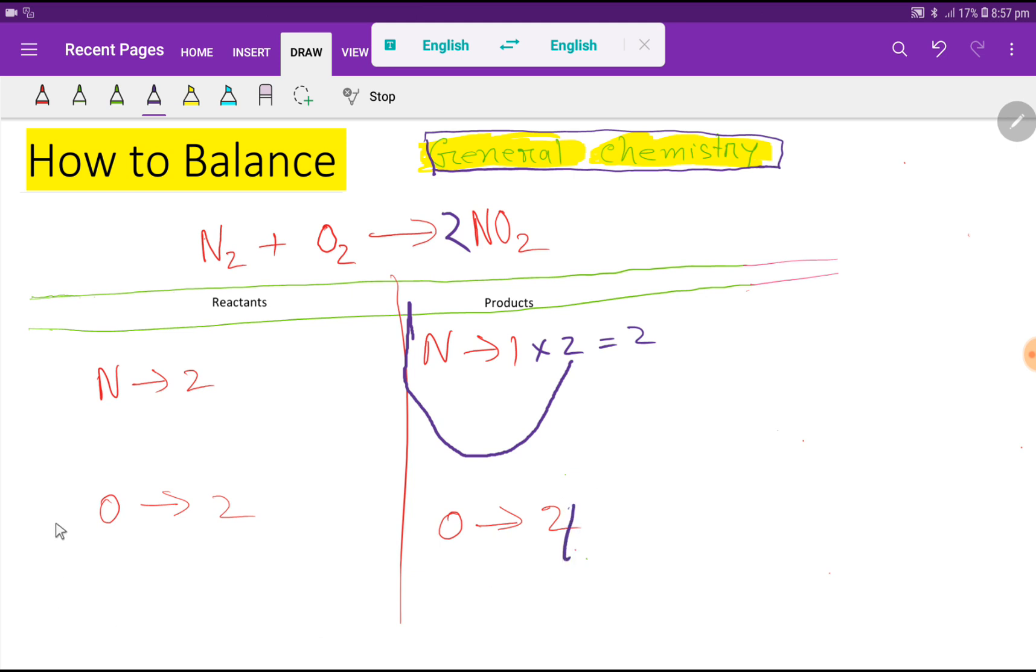Now look, nitrogen 2, 2 nitrogen is balanced. Oxygen here 2 but here 4. So oxygen is not balanced. So to balance the oxygen, what can I do?